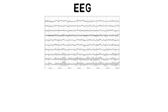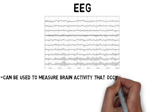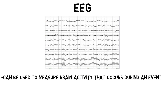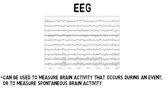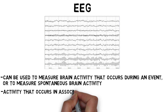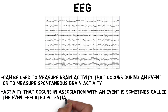EEG provides an image of electrical activity in the brain represented as waves of varying frequency, amplitude, and shape. It can be used to measure brain activity that occurs during an event, like the completion of a task or the presentation of a stimulus, or to measure spontaneous brain activity that happens in the absence of a specific event. The typical electrical activity that occurs in association with an event is sometimes referred to as the event-related potential.